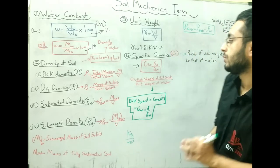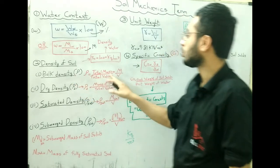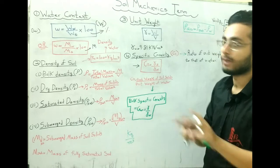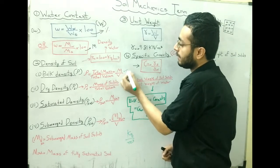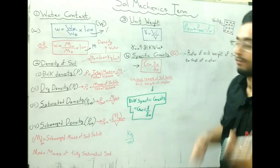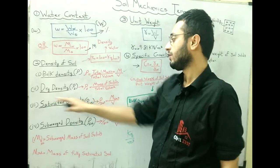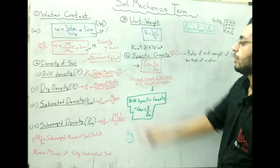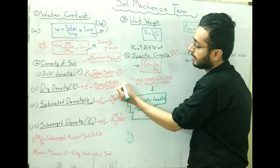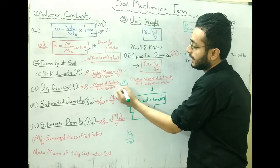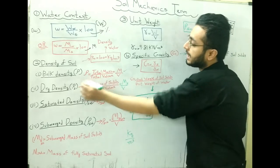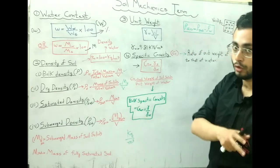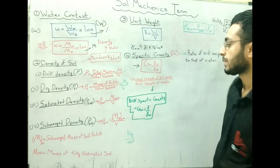Bulk density is denoted by rho. It is total mass divided by total volume. The density of soil is also known as bulk density. Next, dry density is denoted by rho_d, and it equals mass of solids divided by total volume, represented as Ms divided by V. In dry density, we take only the mass of soil solids as the numerator, while the denominator is the total volume of the soil sample including voids.